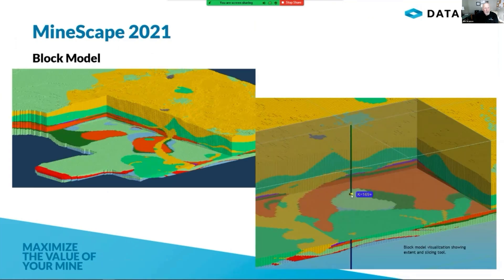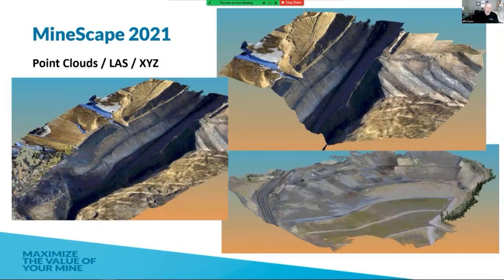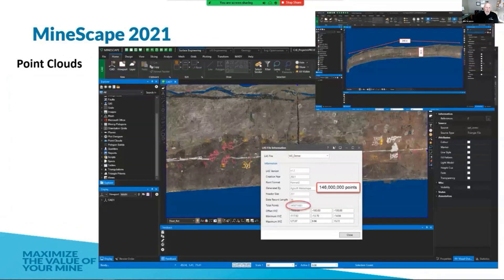This is a block model. We can bring in gigabytes of data into Minescape and actually slice and dice it. You can see we're doing 3D cross-sections through here. This is point clouds in multiple formats being brought in — millions of data points that we can bring right into Minescape, view, rotate, and do whatever we need to do with it. This is an absolute must in today's world. It's all about bringing in big data. This is an example of client data — this one happens to be 146 million points that we can load up, and sure enough, it works.